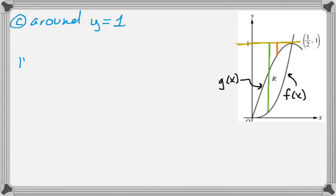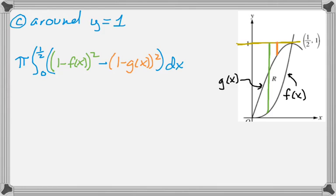Alright, so the volume is going to be π times the integral from 0 to 1/2 of the big radius, which is outer minus axis squared. Or in this case, I'm going to do axis minus outer. So 1 minus g of x. 1 minus f(x), I'm sorry. Quantity squared. And then minus. And then axis minus inner in this case. So the quantity 1 minus g(x), quantity squared. And then put a dx. And that's the whole thing.